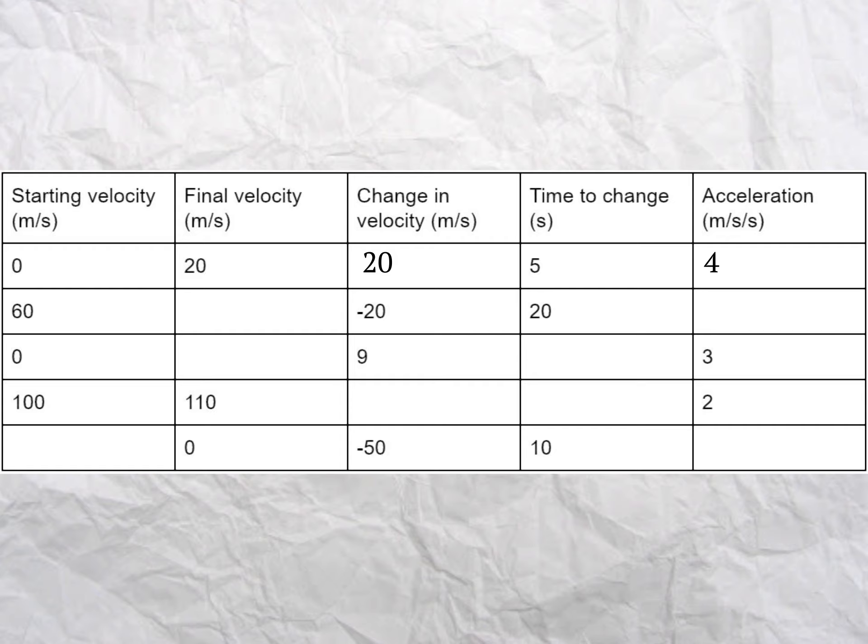Line 2 wants the final velocity, if you started at 60 meters per second, and changed by minus 20 meters per second. 60 minus 20 equals 40 meters per second. And the acceleration is minus 20, the change, divided by 20, the time. And that equals 1 meter per second per second, but it's negative because we started with minus 20, the thing's getting slower.